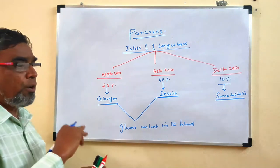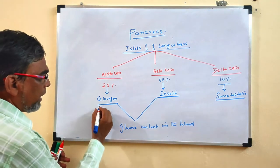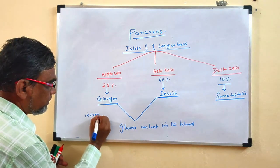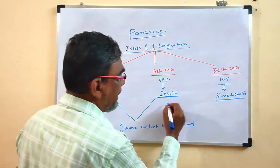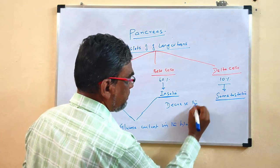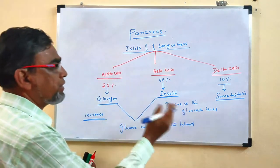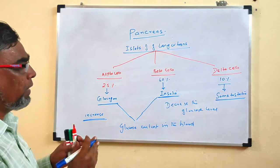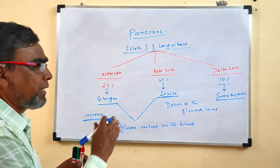Glucagon and insulin are antagonistic in action. Glucagon increases the glucose level, whereas insulin decreases the glucose level. How does glucagon increase the glucose level and how does insulin decrease it? We will see in detail.